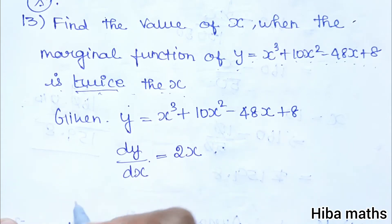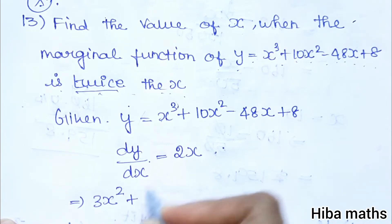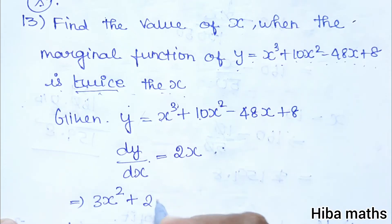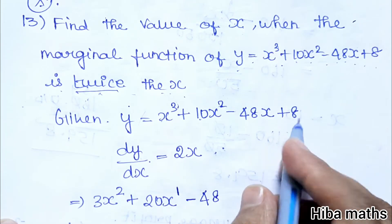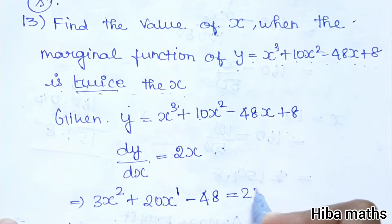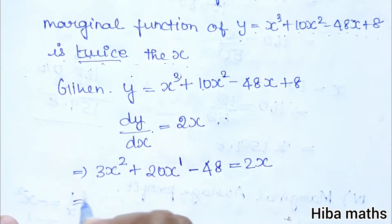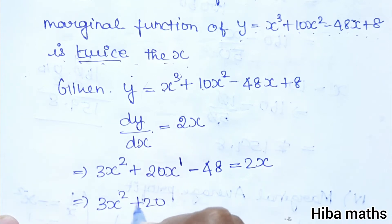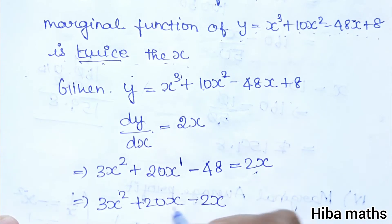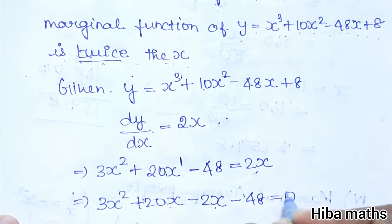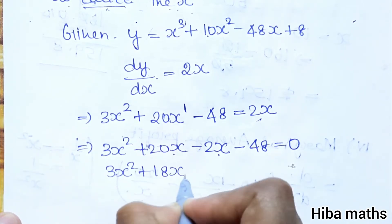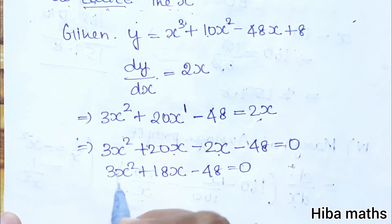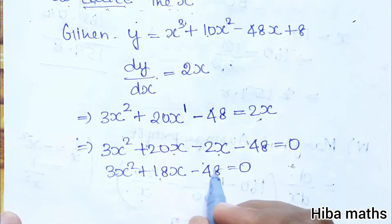Differentiating: dY/dX equals 3X squared plus 20X minus 48, and setting this equal to 2X. Bringing 2X to the left side: 3X squared plus 20X minus 2X minus 48 equals 0, which simplifies to 3X squared plus 18X minus 48 equals 0.